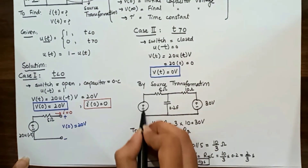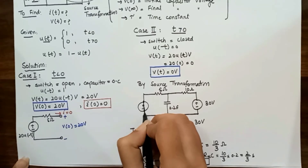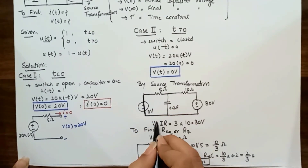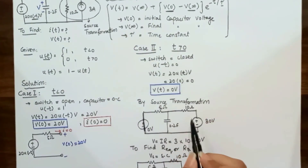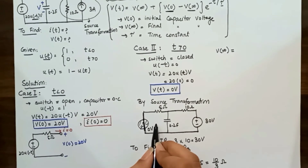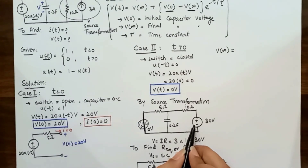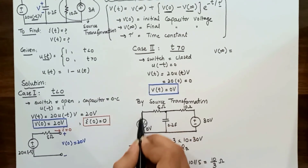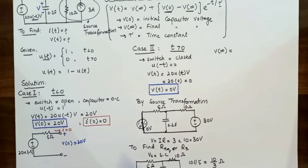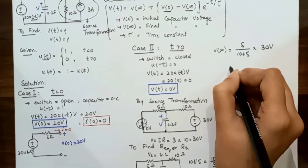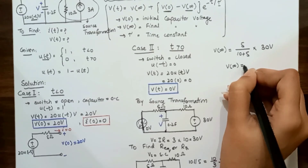Since the voltage equals 0 V, that voltage source is replaced by a short circuit. We now need to find V(∞), the final capacitor voltage. With the total voltage at 30 V, the voltage across the capacitor equals the voltage across the 5 Ω resistor (which is in parallel with the capacitor). Using the voltage divider rule: V(∞) = [5 / (10 + 5)] × 30 = 10 volts.